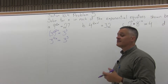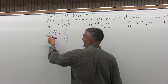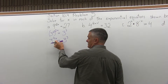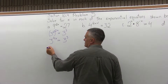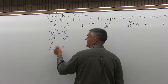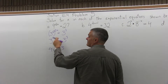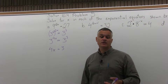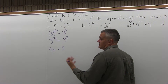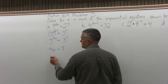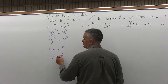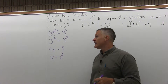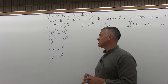The next step is set the exponents equal to each other. If 3 to some power equals 3 to some other power, the powers must be the same. So it must be the case that 4x equals 3. Then the last part is solve for the variable — divide out the 4. So x equals 3 fourths. That's the value that makes the original equation true. That's part A.